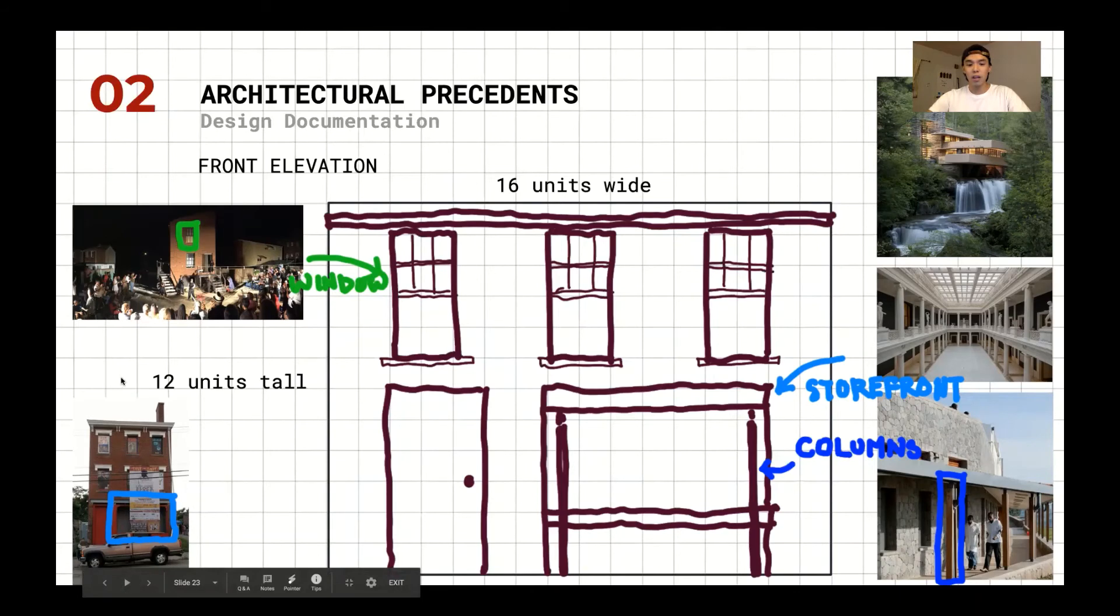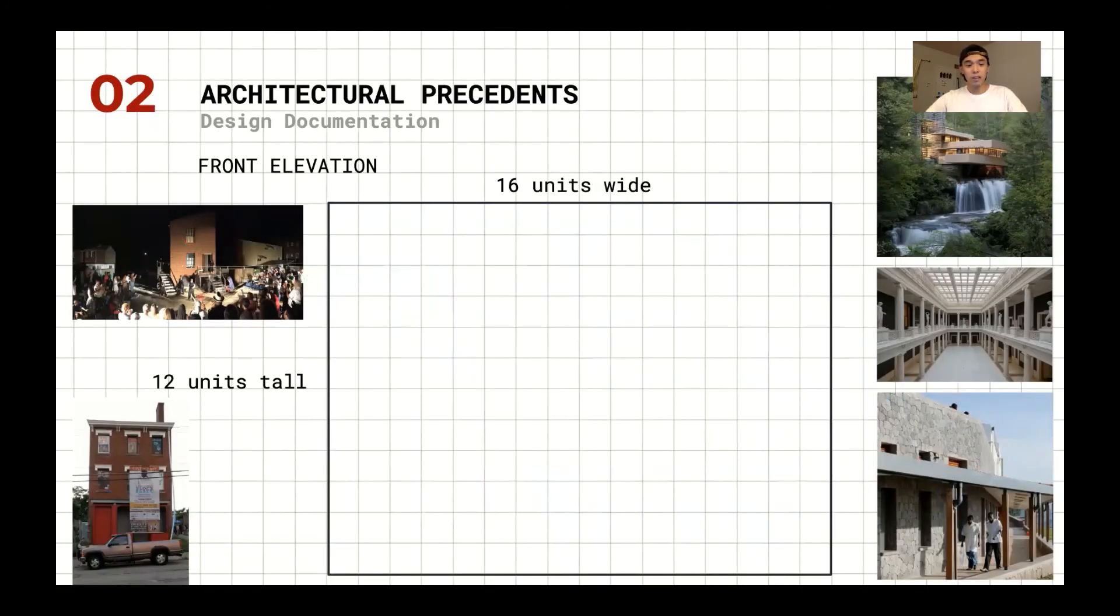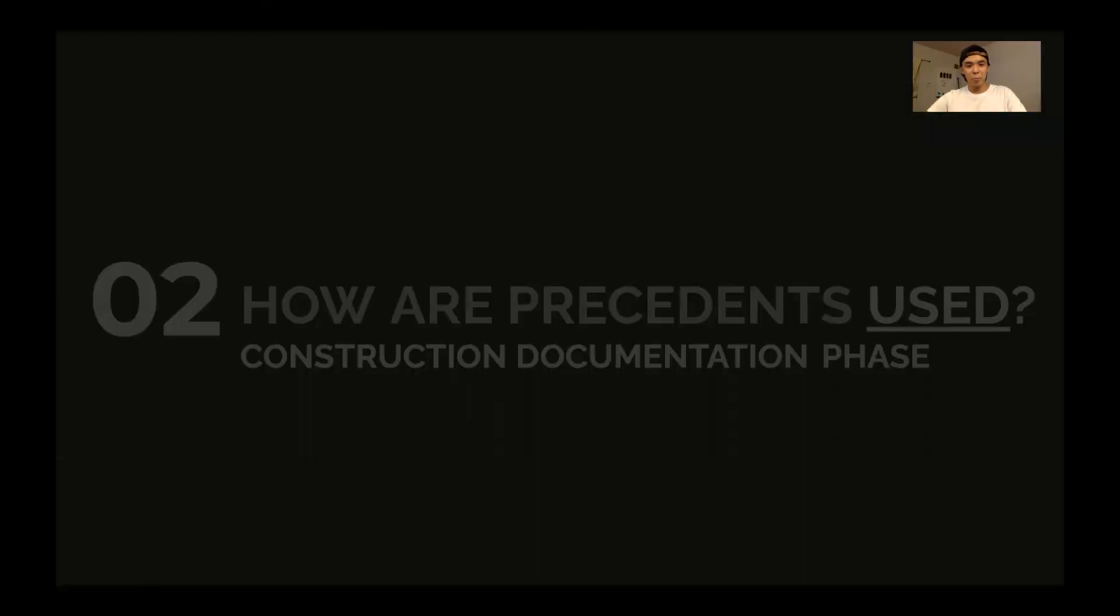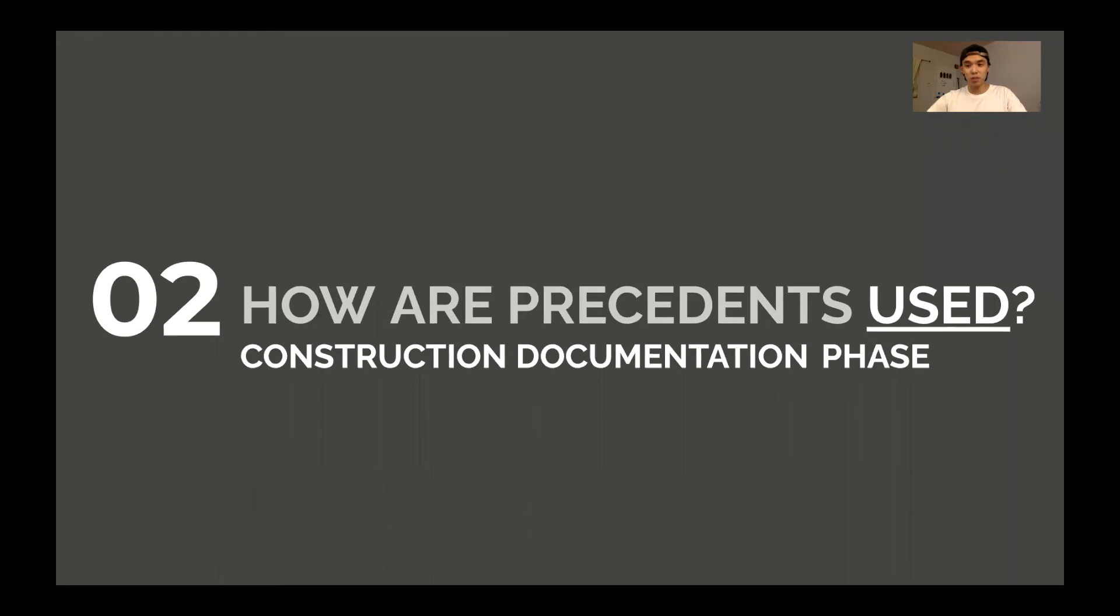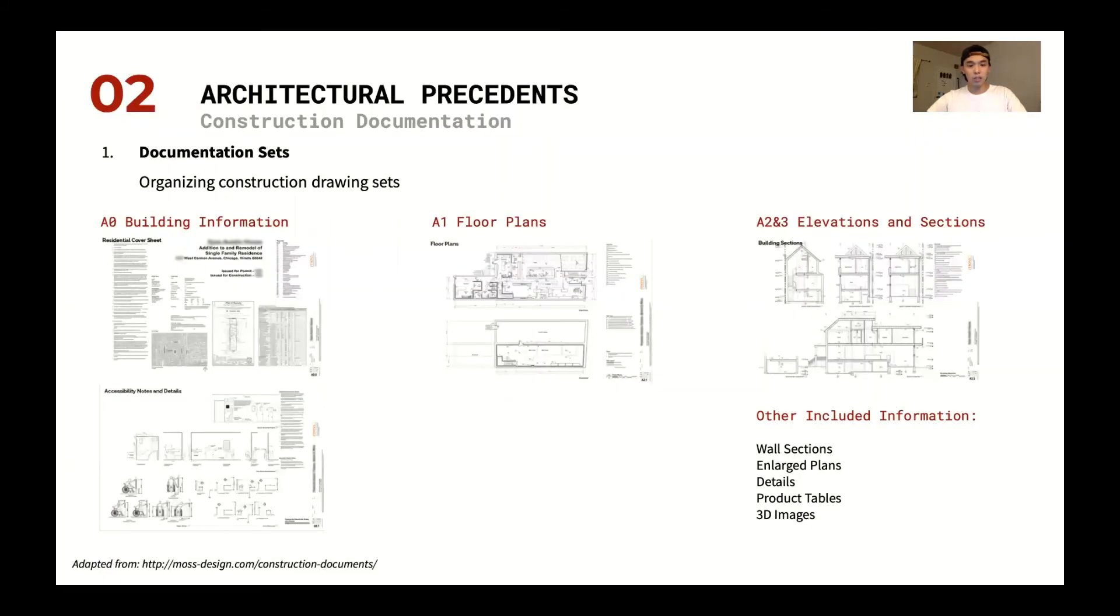Construction documentation, much of it is precedent-based. We base a lot of the documentation set on previous standards that we've established in the profession. The first one being building information covering general accessibility and maybe codes. The second section, A1 or A100s, often covers just floor plans and maybe sometimes ceiling plans. And then the second and third are typically elevations and sections. And so this creates a uniform platform for people in the building industry to actually read any set. They have a general sense of what's going to happen. Other things that might go in the set are wall sections and large plans, details. Maybe sometimes product tables, which list different products and material finishes depending on the section.